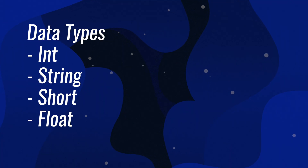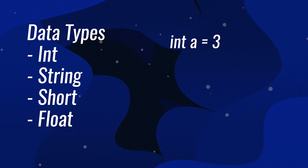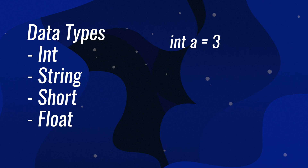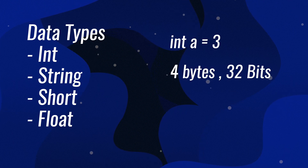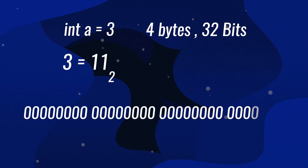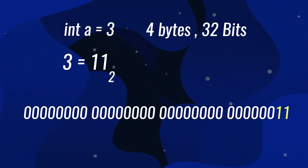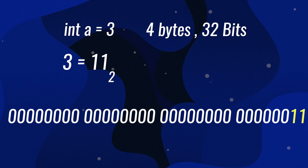For example, we can use an integer to store a number by writing int a equals to three. What we've done here is told the computer to reserve space in its memory for an integer which has the size of four bytes, or 32 bits, to store the value of a. Somewhere in the computer's memory, there is a chain of 32 bits to store the value of a. We initialize that value to three, so that block only stores three, or one-one in binary.